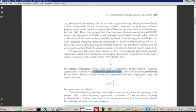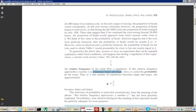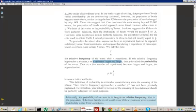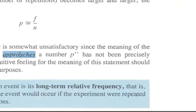Thus, as n, the number of repetitions, becomes larger and larger, the approximation p equals f over n becomes better and better. This definition of probability is somewhat unsatisfactory since the meaning of the phrase 'the relative frequency approaches the number p' has not been precisely explained. Nevertheless, your intuitive feeling of the meaning of this statement should be perfectly adequate for most purposes.